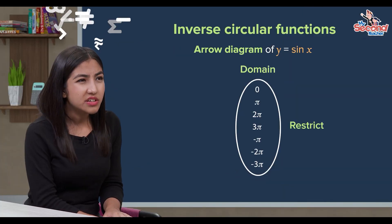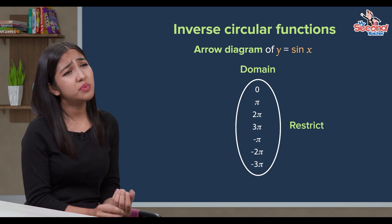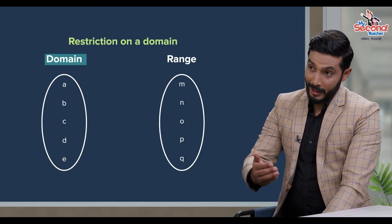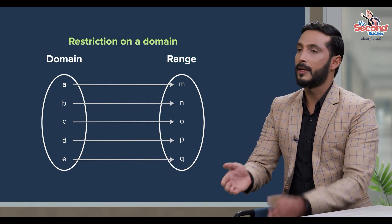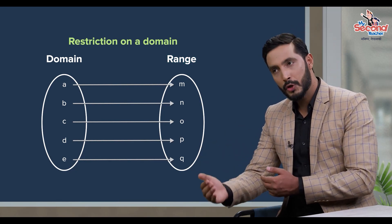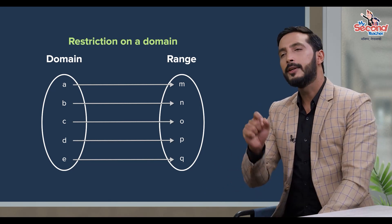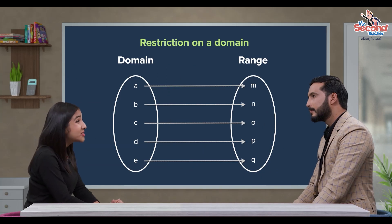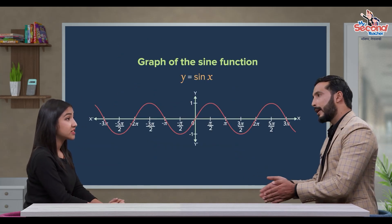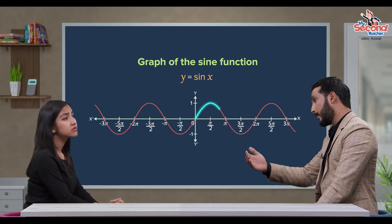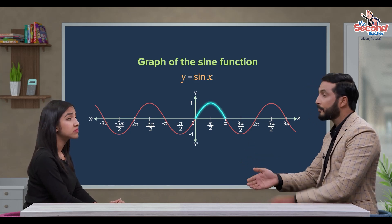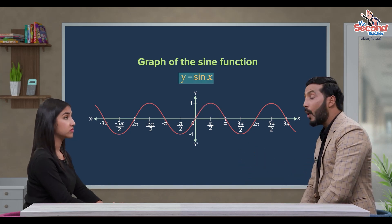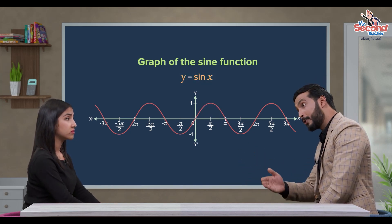Domain lai restrict karne de, tha bai li kye banne? Trigonometric function aru lai hara ek domain ka laggi farak farak range honne gari define garinza, jestho ki diye ko trigonometric function one to one honza. Yehi process lai nahi restriction on a domain bane inza. Example ko laggi y equals sin x ma x ko value 0 dekhi pi samma restrict garay hoane, x ko value 0 ra pi ka laggi y ko value 0 honne hunda y equals sin x one to one honza.